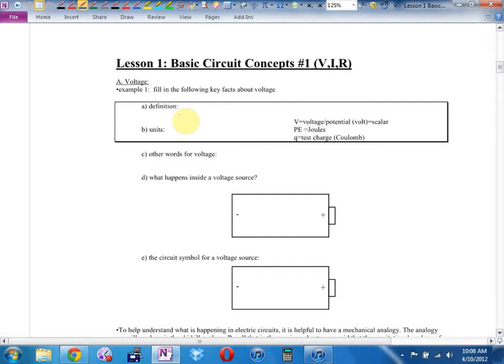Voltage. Fill in the following key facts about voltage. What was its definition? Well, its definition was how much potential energy per coulomb. It was how much energy per charge you had at any one location. And the units? A joule per coulomb, which was defined as a volt.